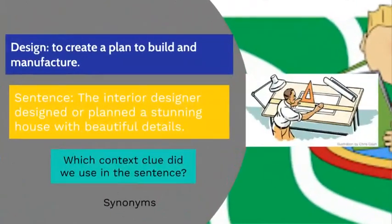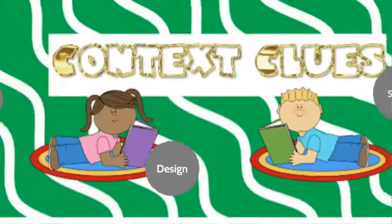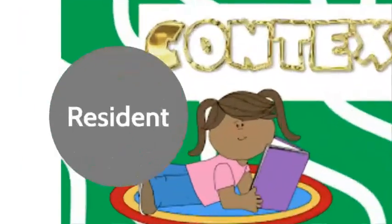Moving on to the word 'design.' Design means to create a plan to build and manufacture. Take a look at the image — this man is designing something, sketching and creating a plan to build and manufacture. Here's a sentence: 'The interior designer designed, or planned, a stunning house with beautiful details.' The words 'design' and 'planned' are synonyms — they have a similar meaning. So design means to create a plan to build and manufacture.